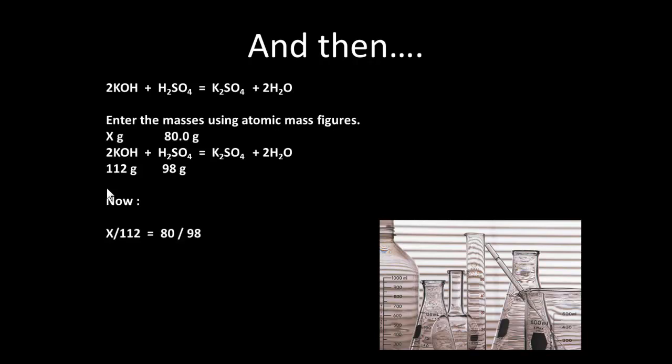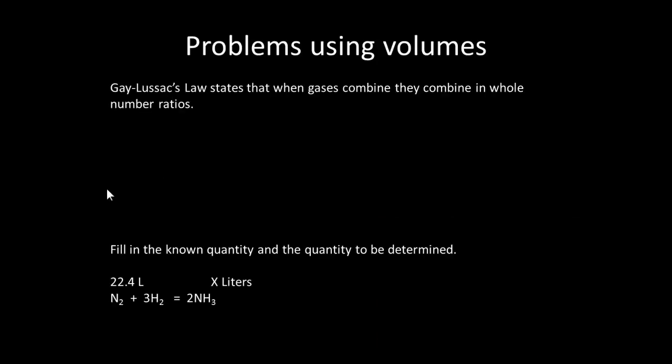We enter the masses using atomic mass figures: 112 grams of potassium hydroxide would react with 98 grams of sulfuric acid. We've got 80 grams of sulfuric acid and want to know what x is. So x over 112 equals 80 over 98, and that makes x equal to 91.4 grams.